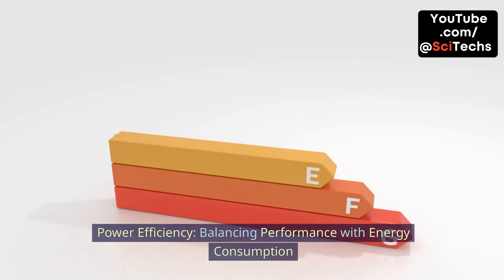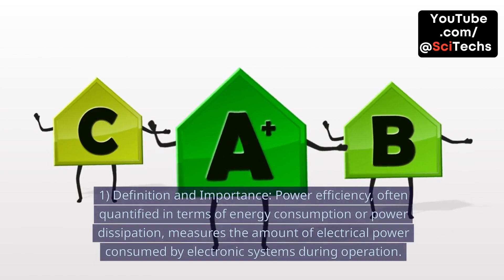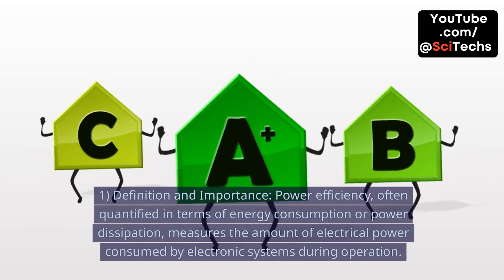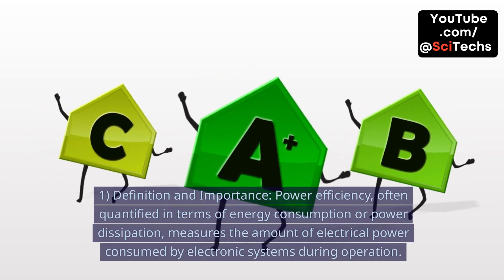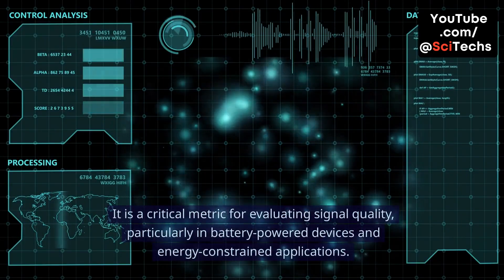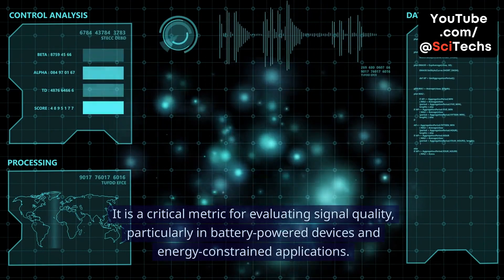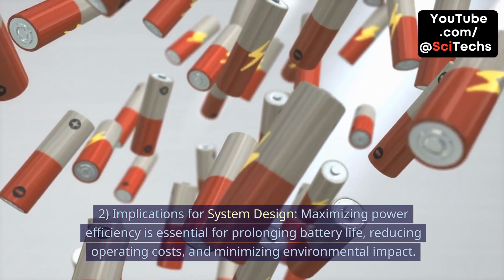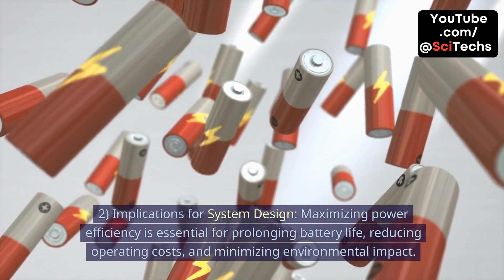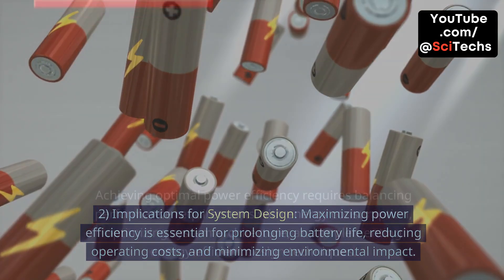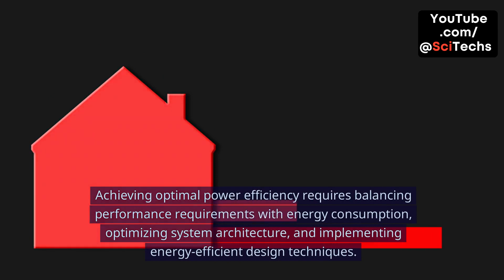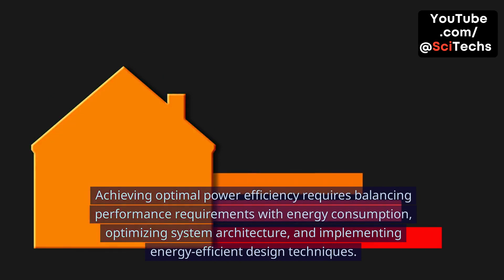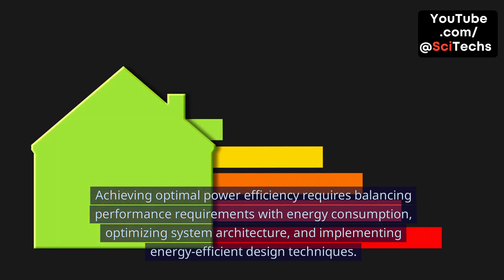Power Efficiency: Balancing performance with energy consumption. Definition and importance: Power efficiency, often quantified in terms of energy consumption or power dissipation, measures the amount of electrical power consumed by electronic systems during operation. It is a critical metric for evaluating signal quality, particularly in battery-powered devices and energy-constrained applications. Maximizing power efficiency is essential for prolonging battery life, reducing operating costs, and minimizing environmental impact. Achieving optimal power efficiency requires balancing performance requirements with energy consumption, optimizing system architecture, and implementing energy-efficient design techniques.